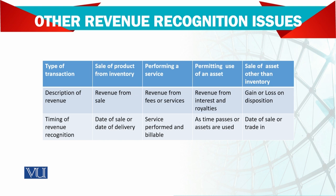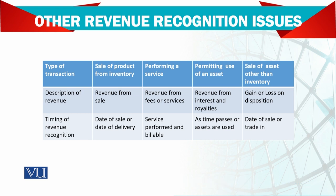Permitting use of an asset - revenue from interest and royalties - recognized as time passes or as assets are used. For example, you deposit money in the bank, and the bank pays you interest based on time at whatever agreed rate. Sale of assets other than inventory - gain or loss on disposal - recognized at date of sale or trade-in. These are the basic rules.